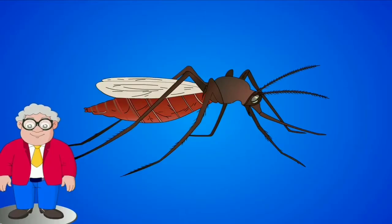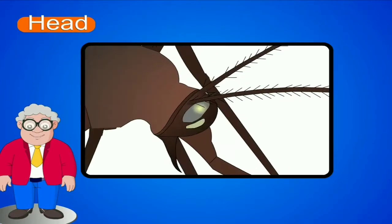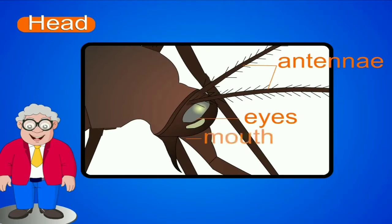Parts of an insect's body: An insect's body can be divided into three distinct parts — head, thorax and abdomen. Number 1: Head. An insect has two feelers called antennae on its head. Antennae help them to smell, feel and taste. Two large eyes and mouth parts are also present on the head.